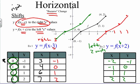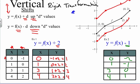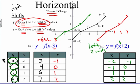In summary: for a vertical rigid transformation, you're adding or subtracting values to the y values, which moves the function up and down. For a horizontal rigid transformation, you subtract or add values to the x values or inputs, which moves the function right or left. We will talk more about transformations in our next video.